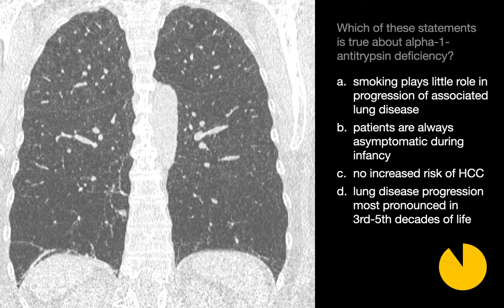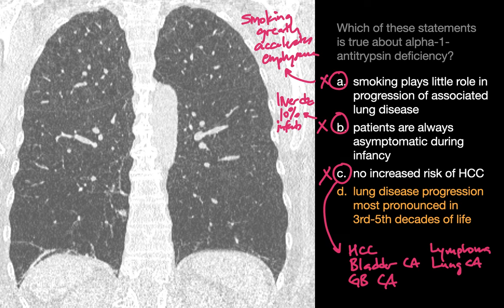Which of the following statements about alpha-1 antitrypsin deficiency is true? The true statement is D: progression of panacinar emphysema due to alpha-1 antitrypsin deficiency is most pronounced during the third through fifth decades. The other statements are false: smoking is synergistic and greatly accelerates emphysema progression; liver disease can develop in up to 10% of deficient infants; and patients are at increased risk of malignancies including HCC, gallbladder cancer, urinary bladder cancer, lung cancer, and lymphoma.